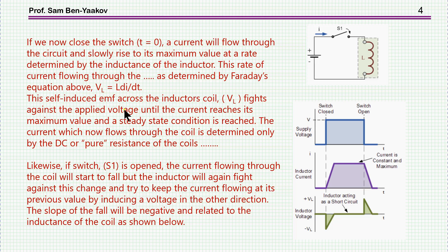This self-induced EMF across the inductor fights against the applied voltage until the current reaches its maximum value and a steady state condition is reached. The current which now flows through the coil is determined only by the DC or pure resistance of the coil. I guess this is the current, so it was going up linearly and then determined by the DC resistance.